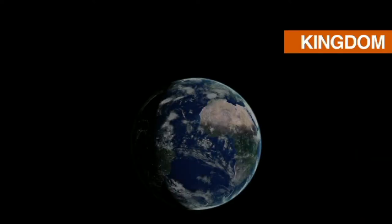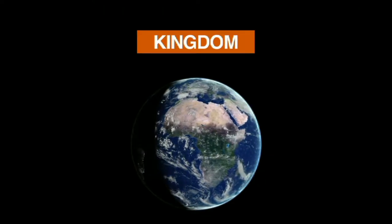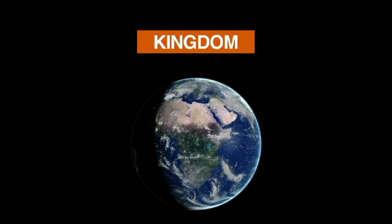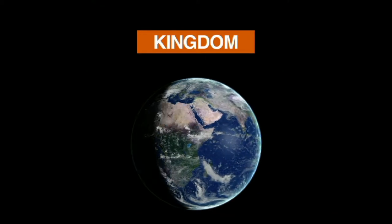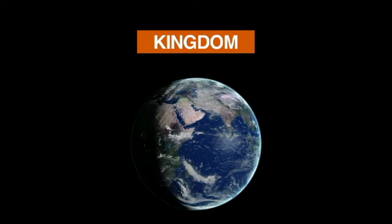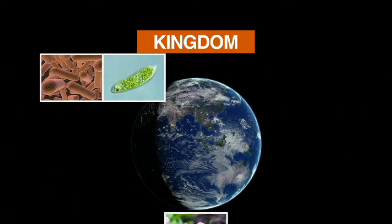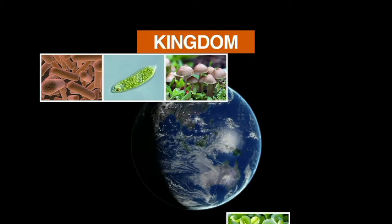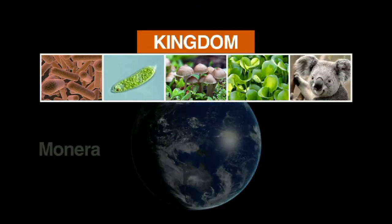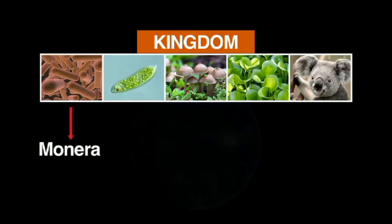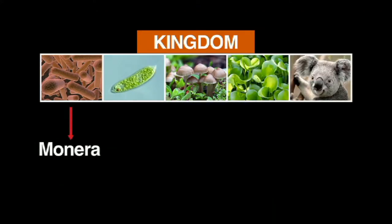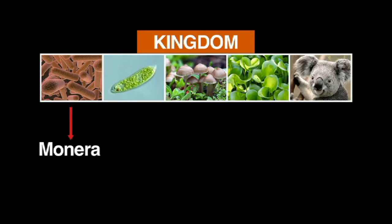Every living creature on Earth belongs to a kingdom. All living things have been divided and classified by today's biologists into five kingdoms or groups. The five kingdoms are Monera, made up of all one-cell life forms that have no nucleus, such as bacteria.